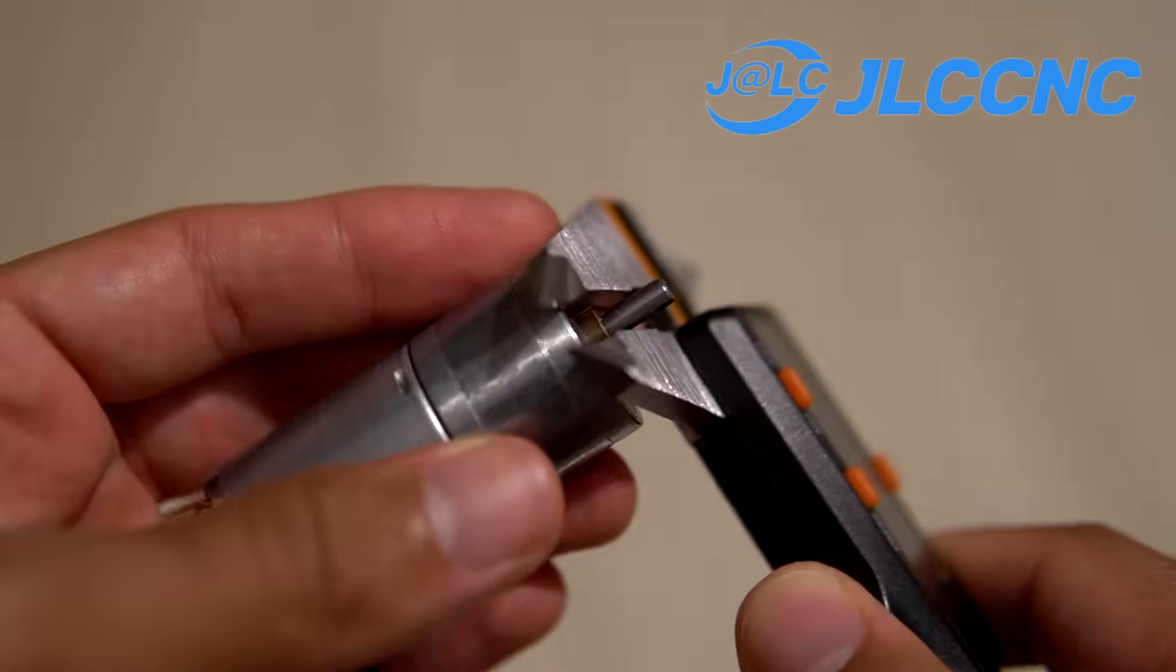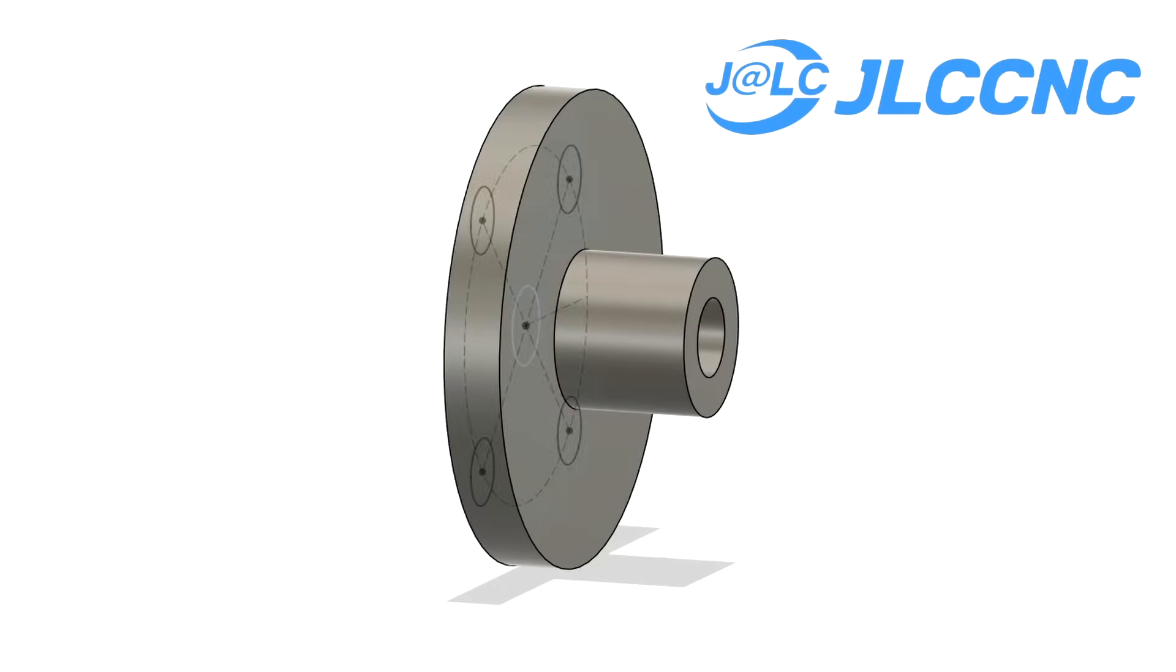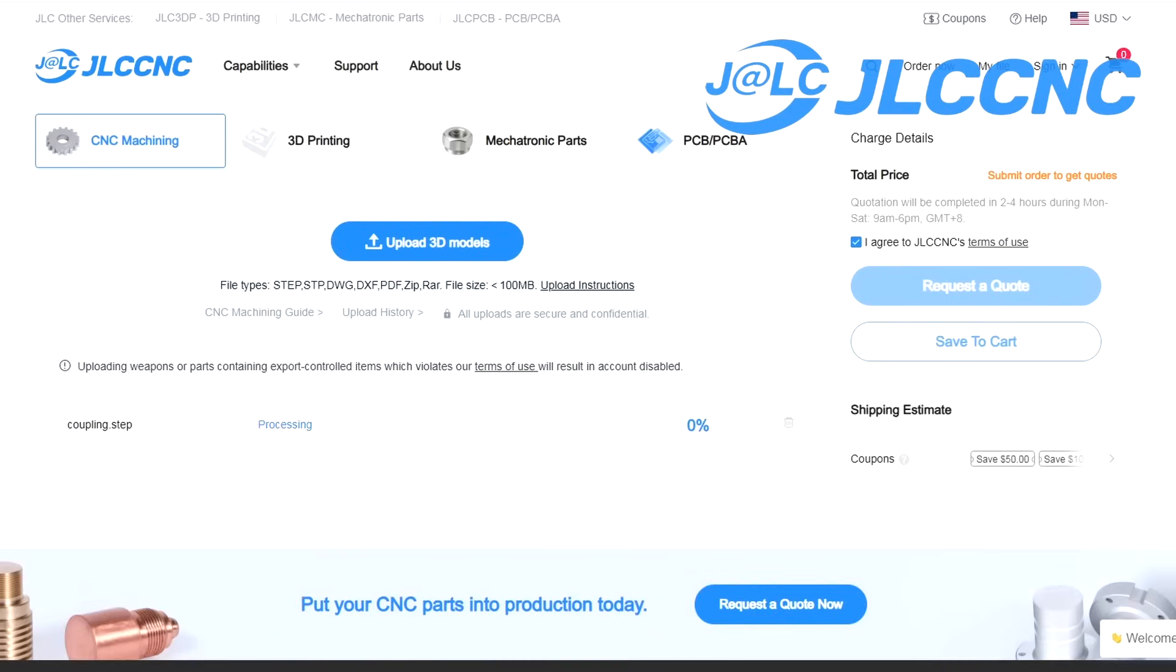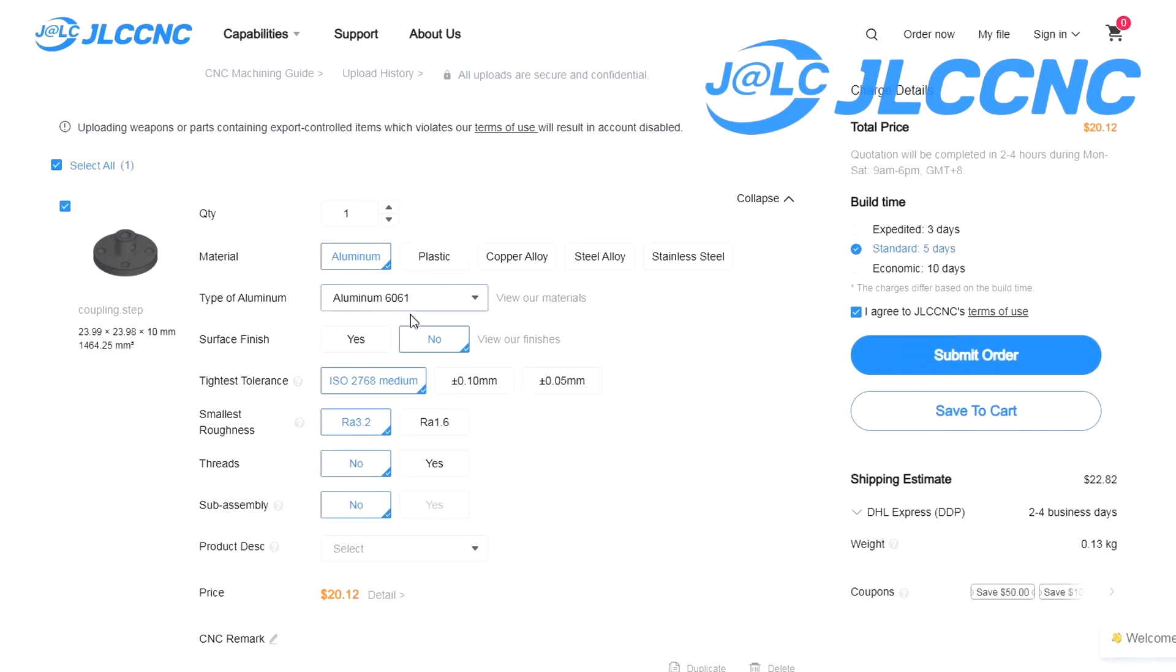So I measured the motors, made sure they matched the data sheets, and then started designing a simple yet functional coupling. Then I uploaded the design to GLC CNC right away. I chose aluminum with no surface finishing because I want the machining marks to be visible.